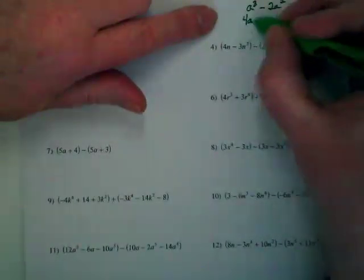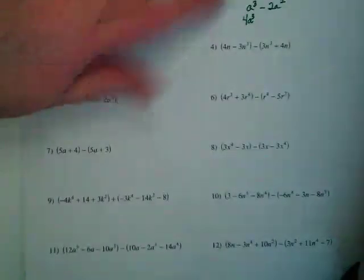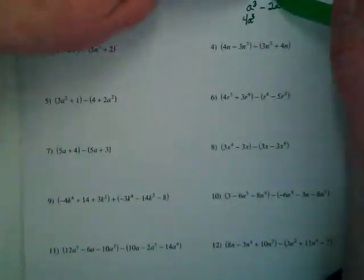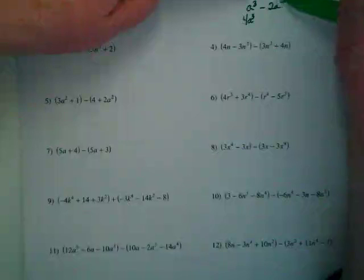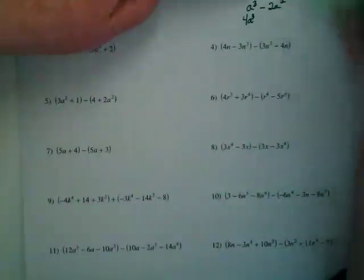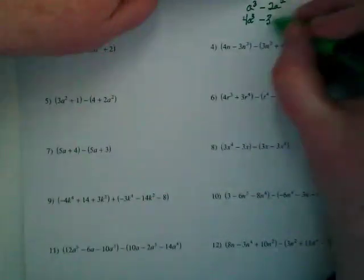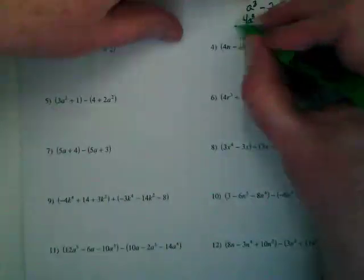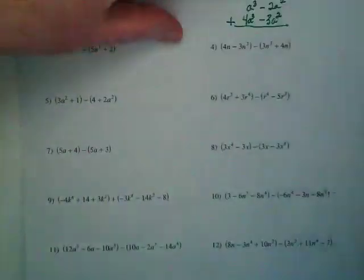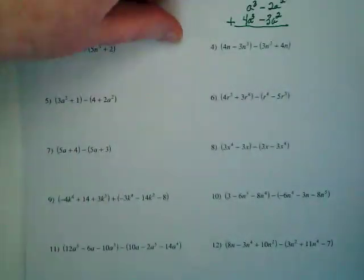So I'm going to put 4a to the third power underneath. And this one is going to become what? Negative. And it's a to the second power, so it goes with this term, minus 3a to the second power. And then once I've dealt with that negative, I can just add them together.